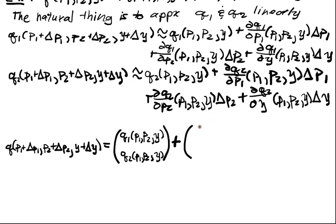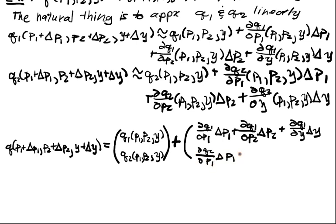Let's write it out. This is DQ1/DP1, I'll suppress the argument, delta P1 plus DQ1/DP2 delta P2 plus DQ1/DY delta Y. And then what's this guy? Well it's DQ2. From this component I'll have DQ2/DP1 delta P1 plus DQ2/DP2 delta P2 plus DQ2/DY delta Y.